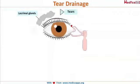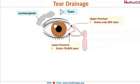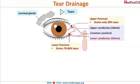Now let's look at the detailed structures. After draining into the conjunctival sac, the tears go into the upper punctum and the lower punctum. Puncta are little openings which provide drainage for the tears. The upper punctum drains into the upper canaliculus, and the lower punctum drains into the lower canaliculus.